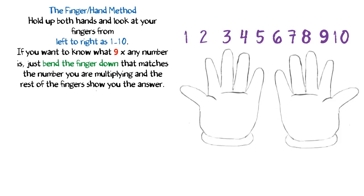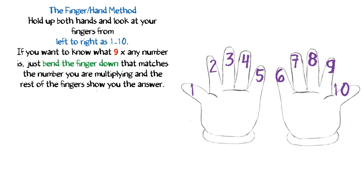The finger hand method. Hold up both hands and look at your fingers from left to right as 1 to 10. If you want to know what 9 times any number is, just bend the finger down that matches the number you are multiplying and the rest of your fingers show you the answer.